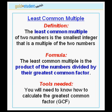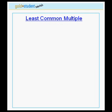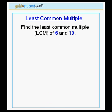Therefore, in order to calculate the least common multiple, you will need to know how to calculate the greatest common factor. Let's do an example. Let's find the least common multiple, or LCM, of the numbers 6 and 10.